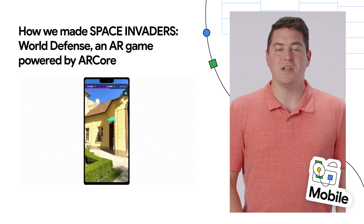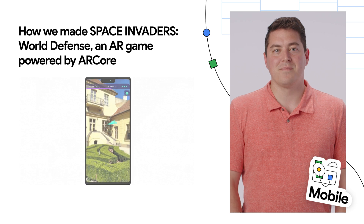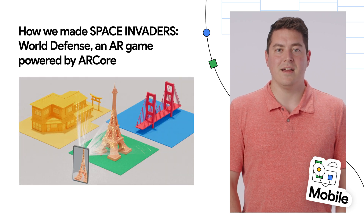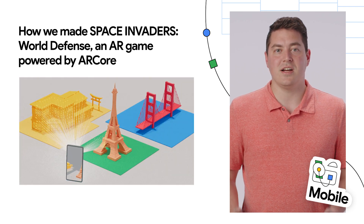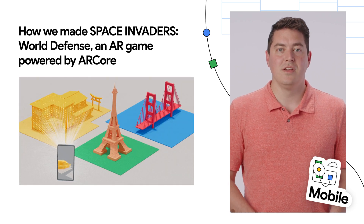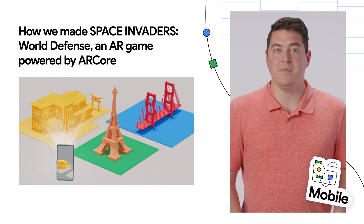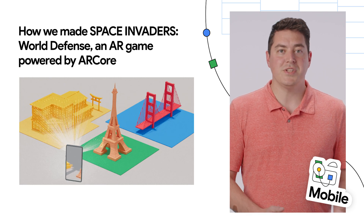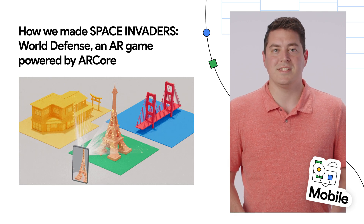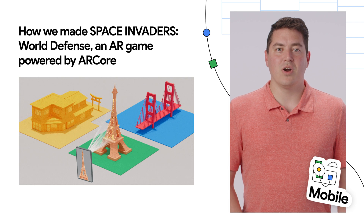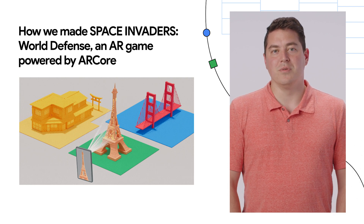You get points by taking them down. The Geospatial API allows you to attach content remotely to any area mapped by Google Street View, creating richer, more robust experiences. You can learn more on the developer's Google blog.